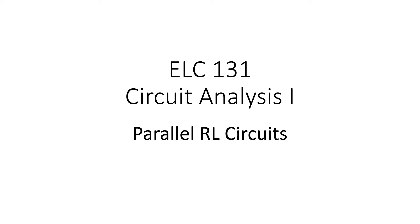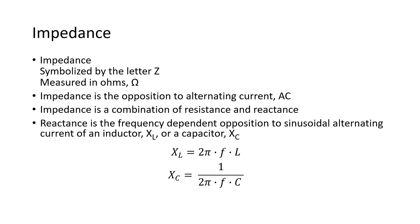This is ELC 131 Circuit Analysis One, and in this presentation we're going to look at parallel RL circuits. Let's review impedance, symbolized with the letter Z, measured in ohms. Impedance is the opposition to alternating current and is a combination of both resistance and reactance. Reactance is the frequency-dependent opposition to a sinusoidal AC provided by an inductor X sub L or a capacitor X sub C. Mathematically, X sub L equals 2πFL and X sub C equals 1 over 2πFC.